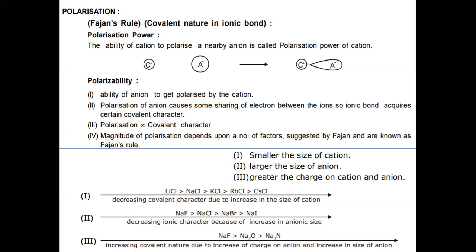The simplified form of Fajan's rule is: smaller the size of cation, larger the size of anion, and greater the charge on cation and anion — greater is the covalent character.